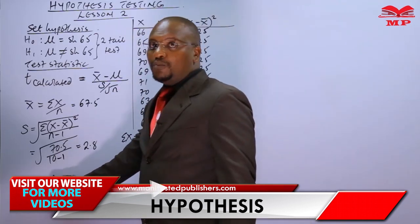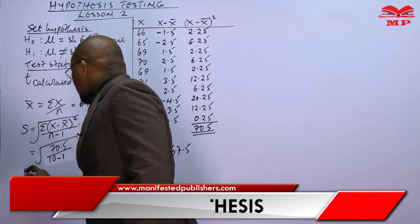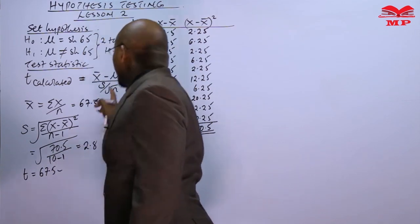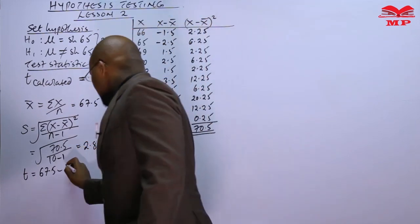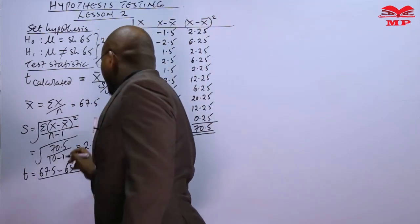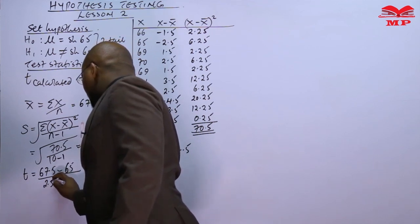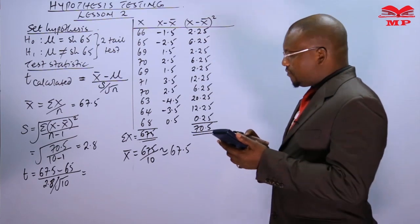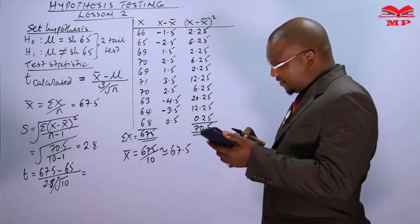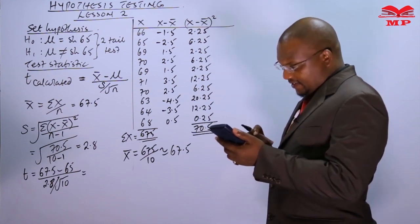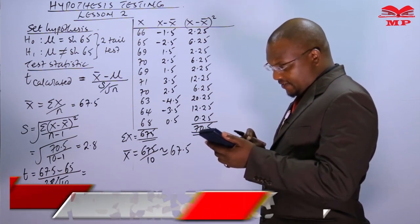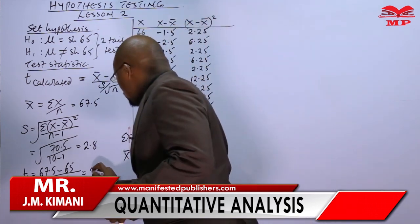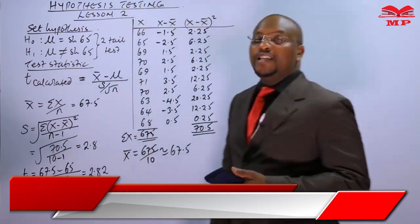Now we can determine t-calculated. The formula gives t equals x-bar minus the population mean, divided by s over root n. Substituting: 67.5 minus 65 gives 2.5, then 2.8 divided by the square root of 10. So t-calculated equals 2.5 divided by that result, giving us approximately 2.82.